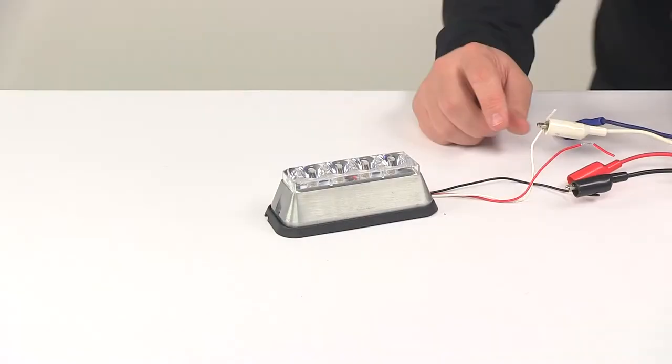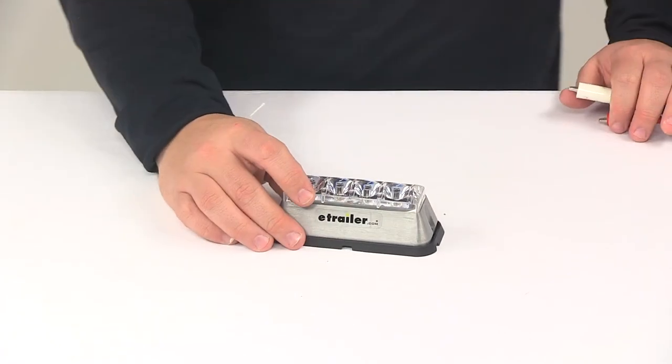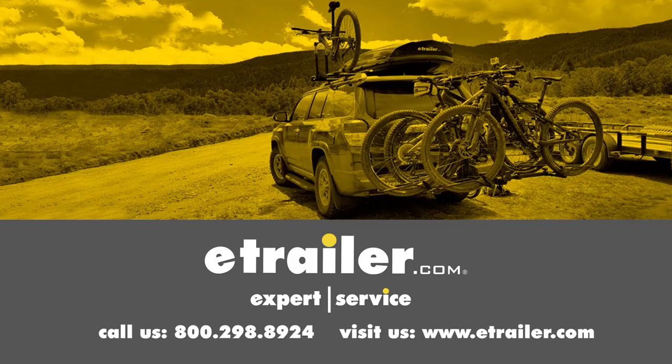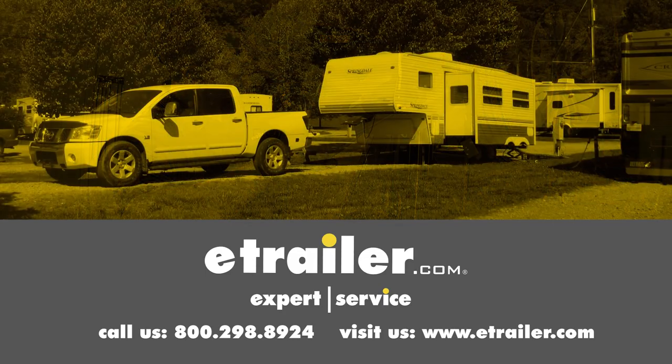That's going to do it for today's look at the Custer 4 LED strobe light or running light. Click the link below to shop, learn more, or visit us at eTrailer.com.